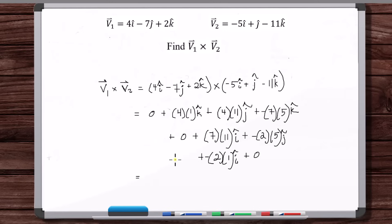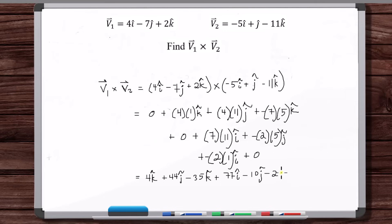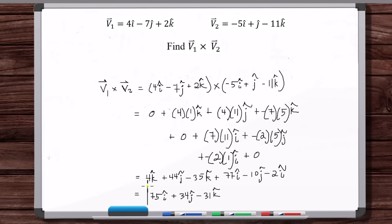Now let's simplify and combine like terms. We get 77i minus 2i, which is 75i. Then 44j minus 10j. And then 4k minus 35k. And there you go — that's V1 cross V2.